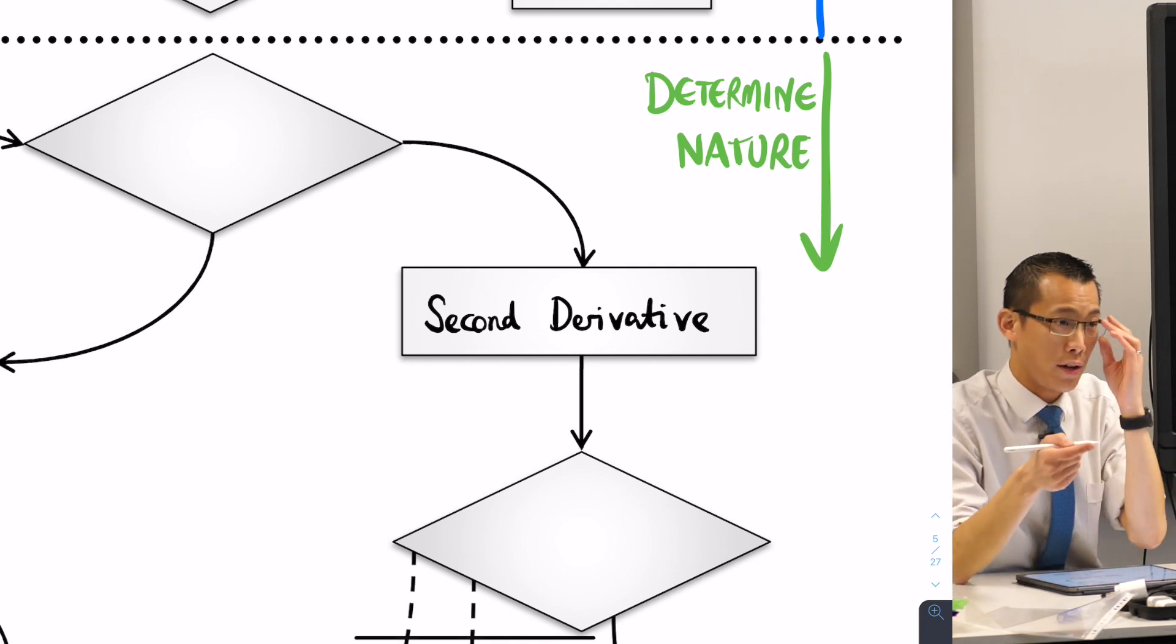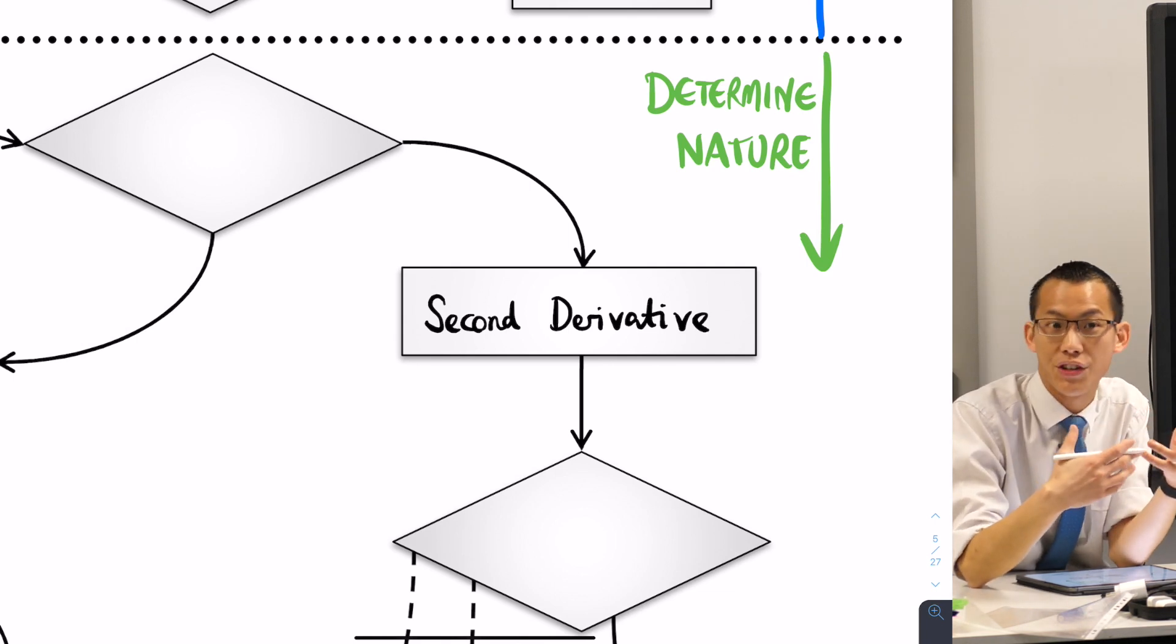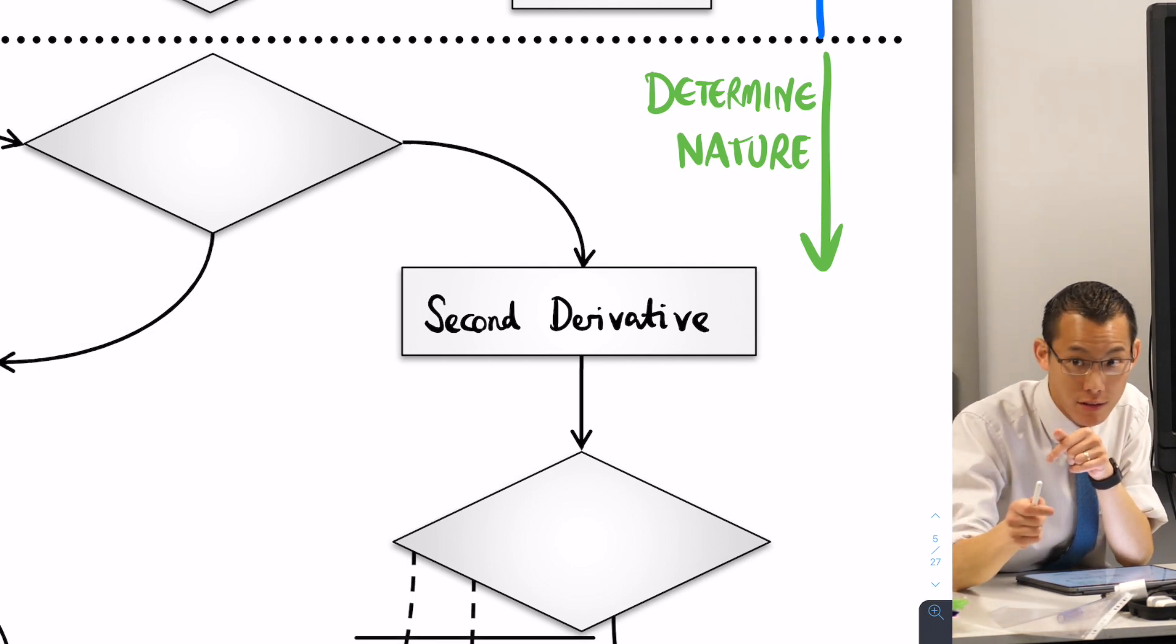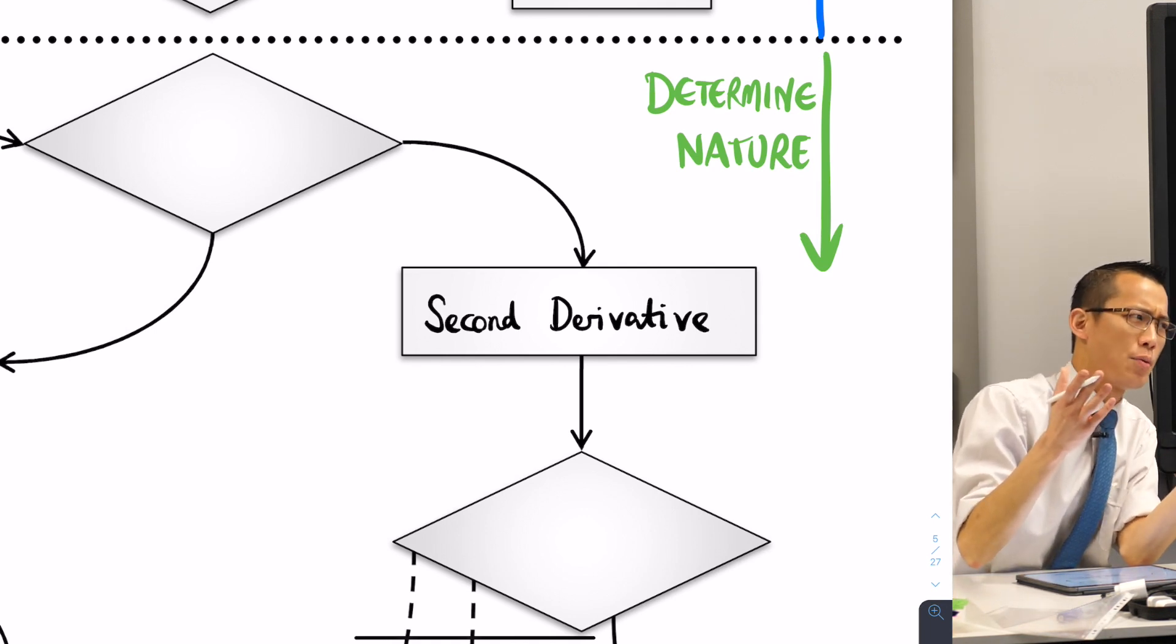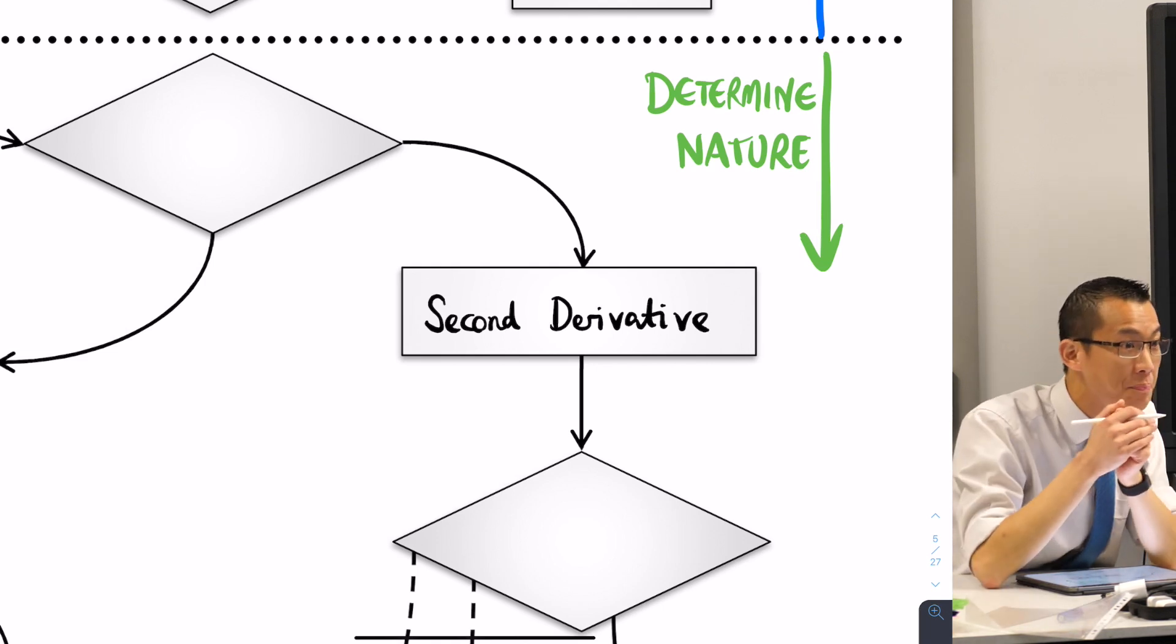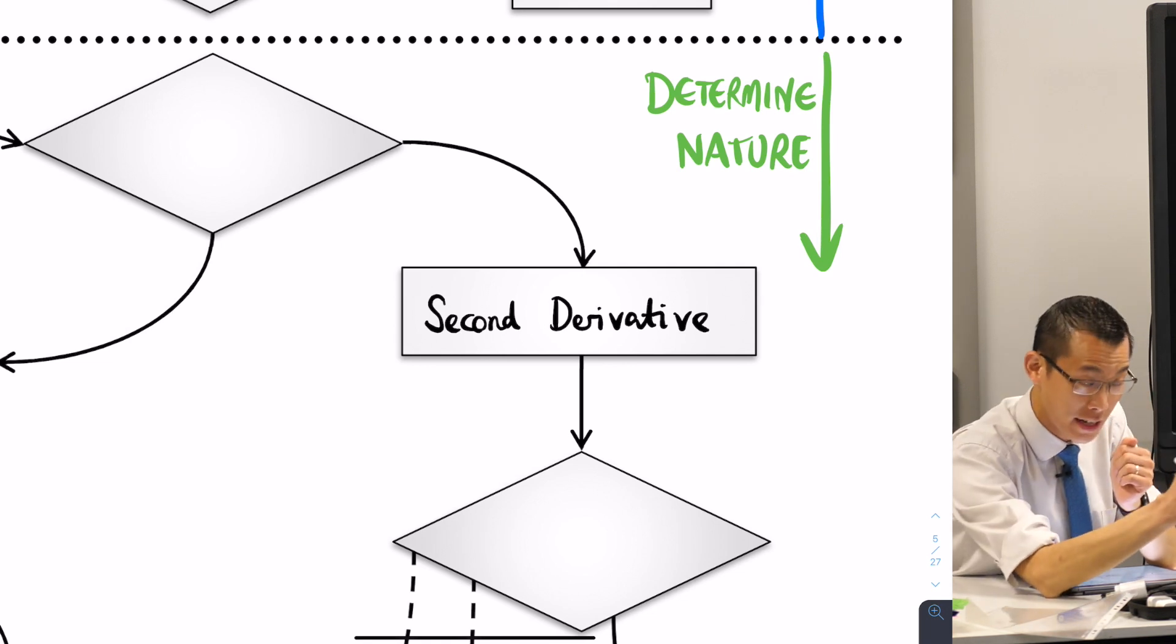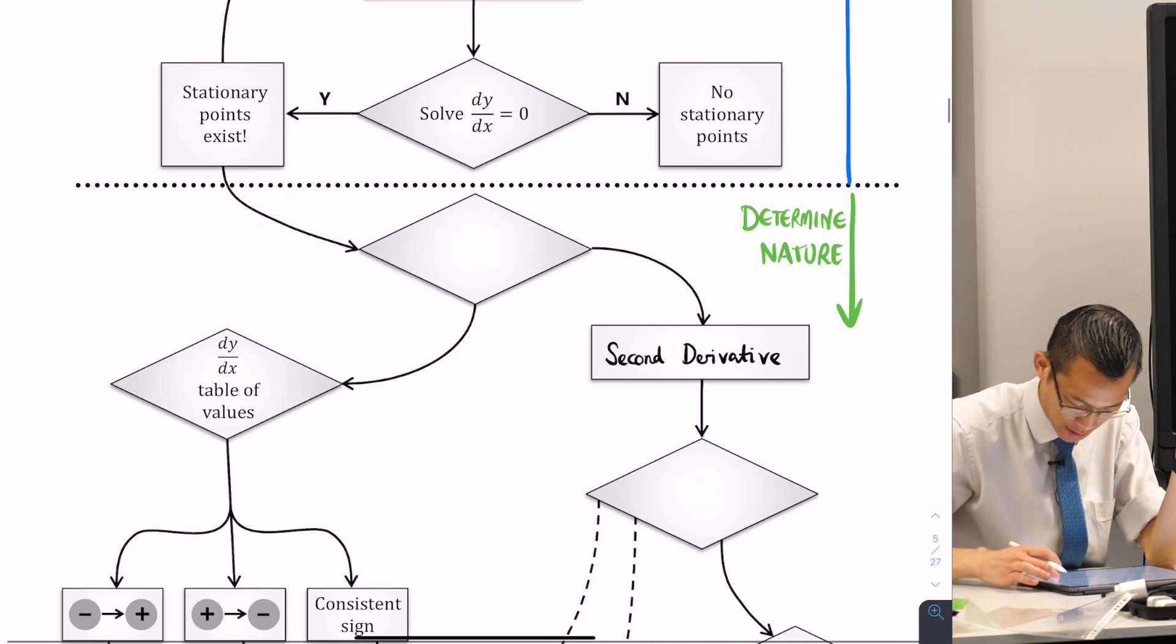In the second derivative, what is it that we're looking for that tells us what kind of a stationary point it is? Dashaun? If we put some x value. So I've found a particular x value. I'm like, oh, there's a stationary point. It's at x equals 2, but I don't know what kind of stationary point it is. What am I going to do with that?